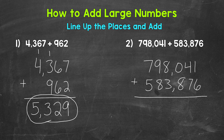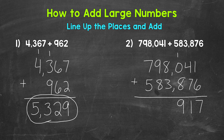Starting with the ones place, we have one plus six, which is seven. Now we work our way left to the tens place — we have four plus seven, which is 11. So put a one in the tens place and carry a one to the hundreds place. In the hundreds place we have one plus zero plus eight: one plus zero is one, plus eight is nine. Now we move left to the thousands place — we have eight plus three, which is 11. So put a one in the thousands place and carry a one to the ten thousands place.